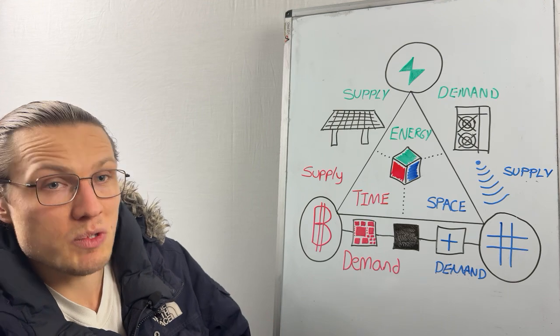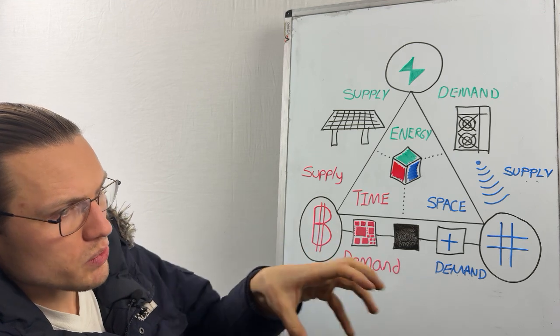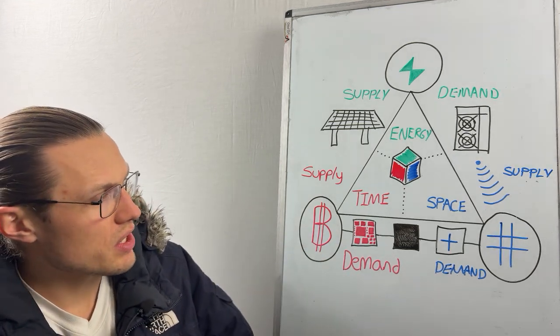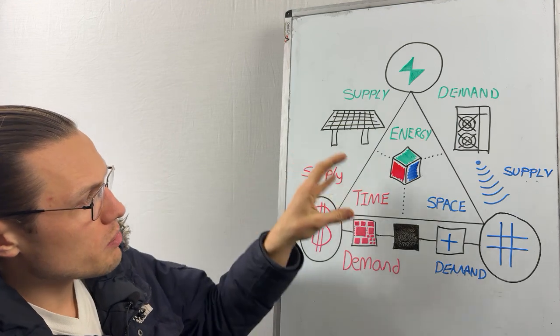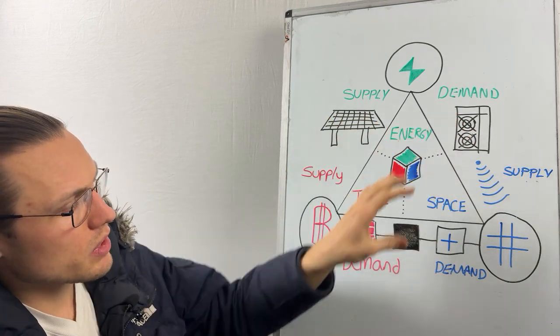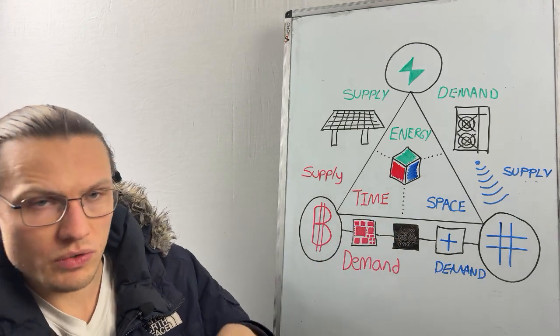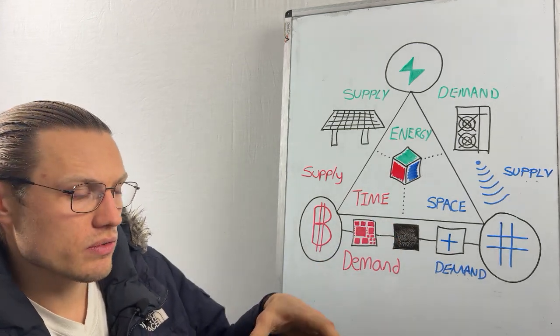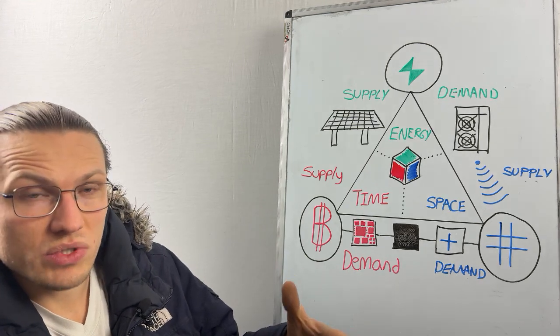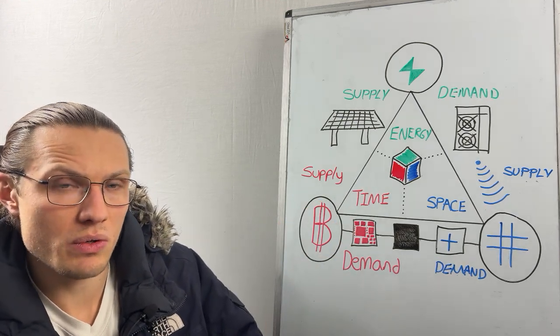The core components of producing power, consuming it into compute, and network communications to the blockchain—those are the three core components of the network staying alive. It's fundamental. Everything here that you see is fundamental to the survival of bitcoin.